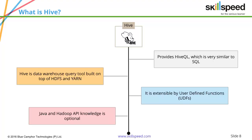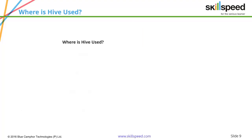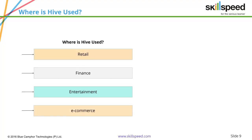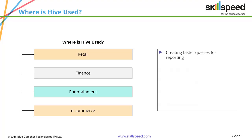Hive has a unique language called Hive Query Language, and 95% of it is exactly similar to standard SQL. Whenever Hive lacks a particular functionality, you can add it with user-defined functions. The tool Hive is so popular that it is used across industries such as retail, finance, entertainment, and e-commerce. Its major uses include creating faster queries for reporting, data mining, and business intelligence.